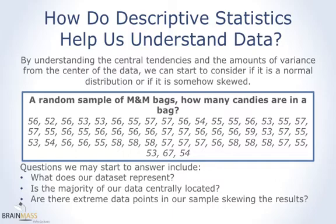So by better understanding the descriptive statistics, specifically the central tendency and the amount of variance from that central tendency, we can start to consider if this is a normal distribution or if it is somehow skewed or off center from what we would expect it to be. So the questions that we can start to answer will include things like what does our data set represent? Is the majority of our data centrally located?